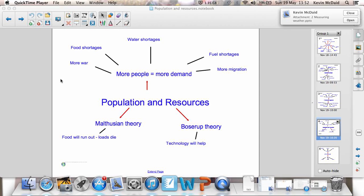There are two ways of looking at how population and resources are linked. Firstly, Thomas Malthus, he said that food will run out, loads of people will die, we will reach a point of crisis. Whereas, Esther Boserup said that technology and human ingenuity will always find a way to overcome the problems of increased population and not enough resources.